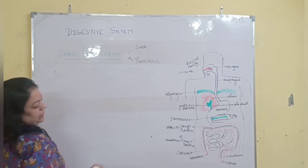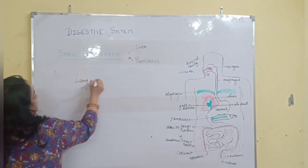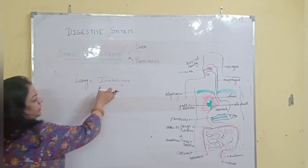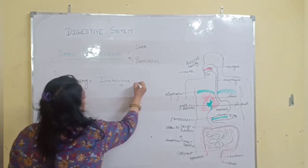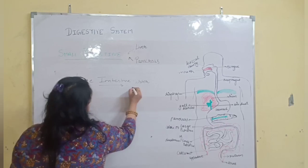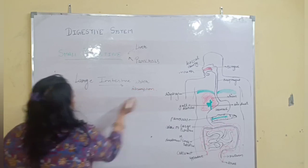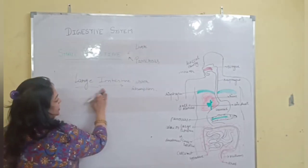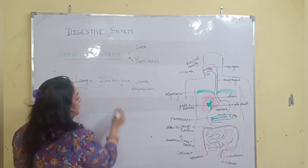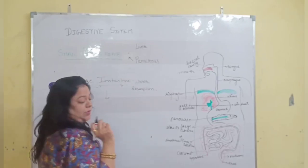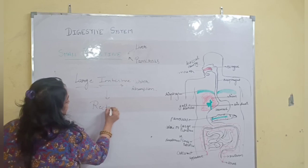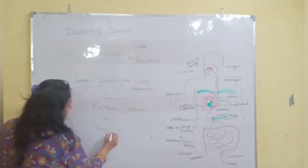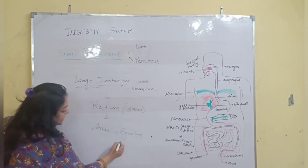Then the food goes into the large intestine. Most of the water absorption takes place inside the large intestine. It is called the large intestine because it is wider than the small intestine. The undigested leftover food passes towards the rectum, where it is stored temporarily, and then to the anus, from where it is expelled from the body — a process known as egestion.